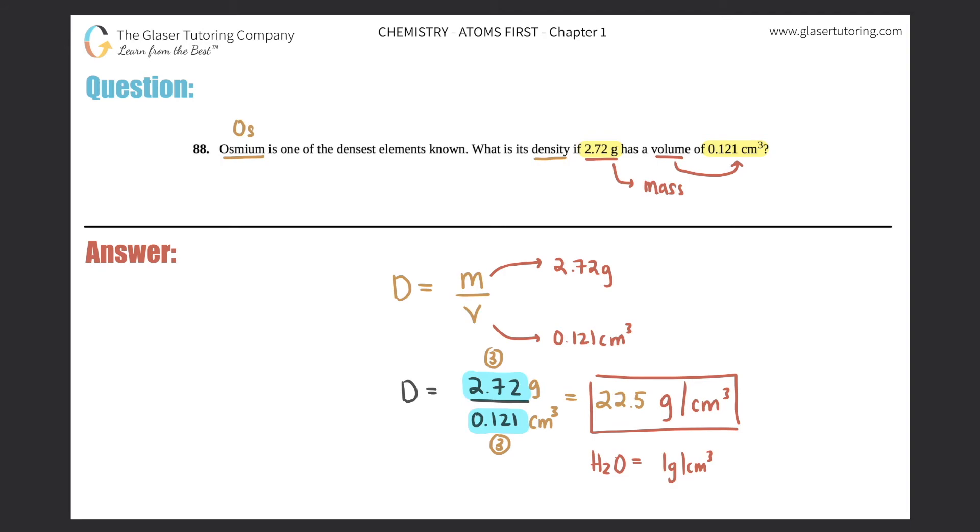But anyway, so that would be the density. So what's the density? 22.5 grams per centimeter cubed. They didn't ask for the specific units, so I am assuming that grams per centimeter cubed is fine.